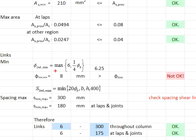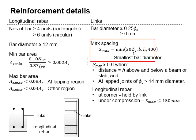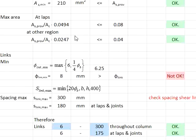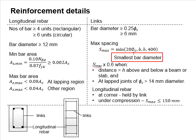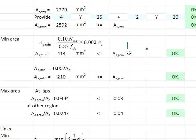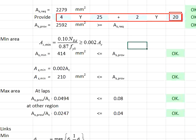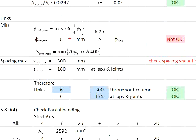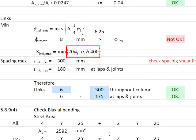We will need to change the link size to become 8 mm. Next, you will need to check for the spacing of the link, determined by this formula. The bar size here represents the smallest bar diameter used in the column. You know that the provided reinforcement bar's smaller size is 20, therefore this will be 20 × 20 = 400. b is 300, h is 350, and there is another 400.